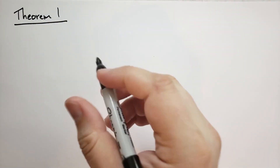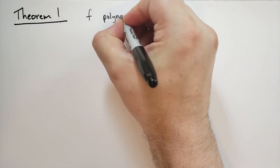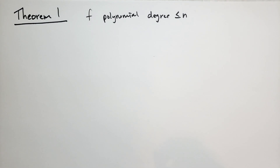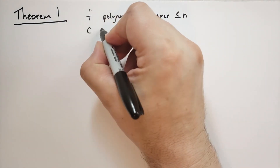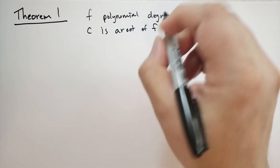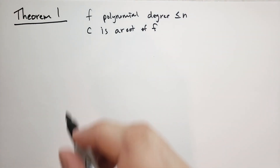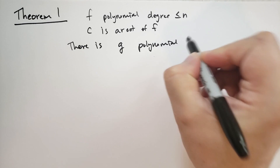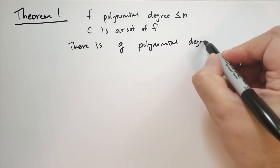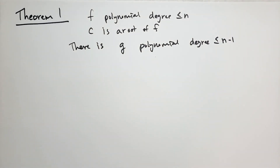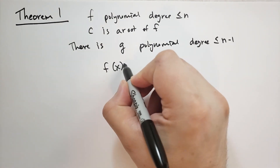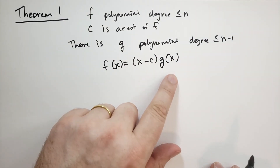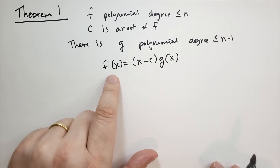Theorem 1 of this section states: let f be a polynomial of degree less than or equal to n, and let c be a root so f(c) = 0. Then there exists a polynomial g of degree less than or equal to n−1 such that f(x) = (x − c) · g(x). So when we factor (x − c) out of f, we are left with g(x).